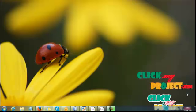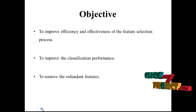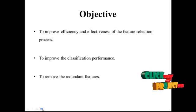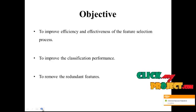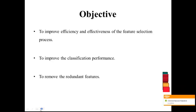Hi, welcome to clickmateproject.com. Let me discuss the title of our process. Our title is Efficient Semi-Supervised Feature Selection: Constraint Relevance and Redundancy. The main objective of this process is to improve the efficiency and effectiveness of the feature selection process, to improve the classification performance, and also to remove the redundant features.